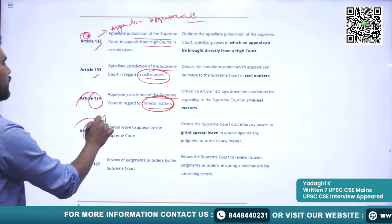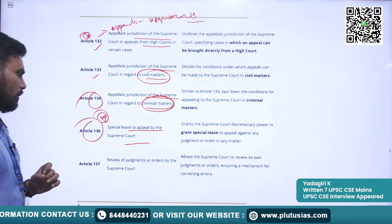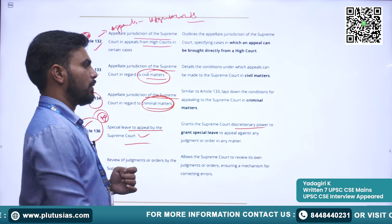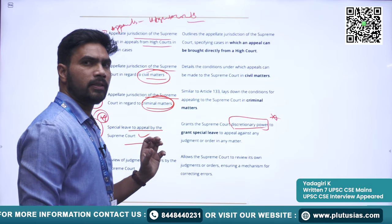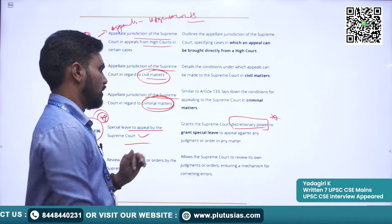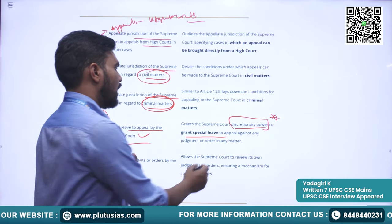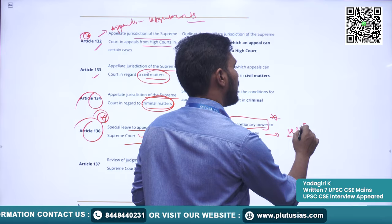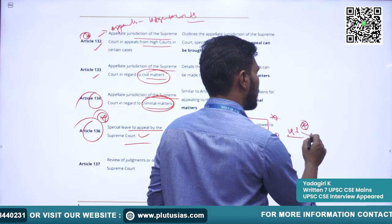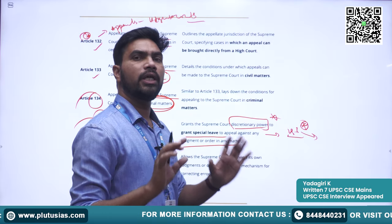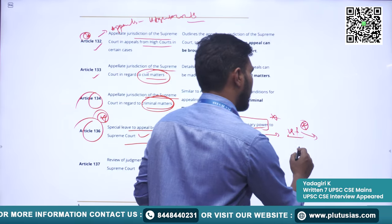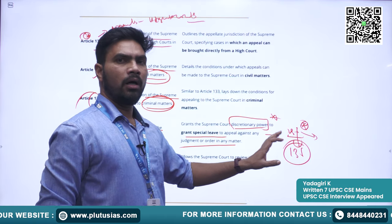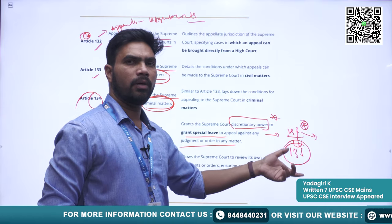Article 136 — Special Leave Petition (SLP) by the Supreme Court — is also very important. It grants the Supreme Court discretionary power to grant special leave to appeal against any judgment or order in any manner. This makes Article 136 a very powerful weapon in the hands of the Supreme Court. It can grant leave or put a hold on any judgment passed by lower courts. The Honorable Supreme Court has used it repeatedly to stop judgments given by lower courts.